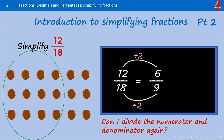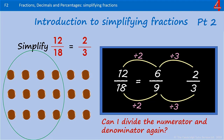Can I simplify that further? 6 and 9 will both divide by 3. 9 divided by 3 is 3, and 6 divided by 3 is 2. I have 2 thirds. I can't divide 2 and 3 by the same number except for 1, which would still be 2 thirds, so that's as far as I can go. I've simplified 12 eighteenths and that's 2 thirds.